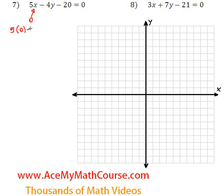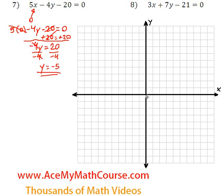So 5 times 0 minus 4y minus 20 is equal to 0. 5 times 0 is just 0. Then I can add 20 to both sides of the equation. These cancel out. Negative 4y is equal to 0 plus 20, 20. We can divide both sides by negative 4. So y would be equal to 20 over negative 4, negative 5. That is the y-intercept.